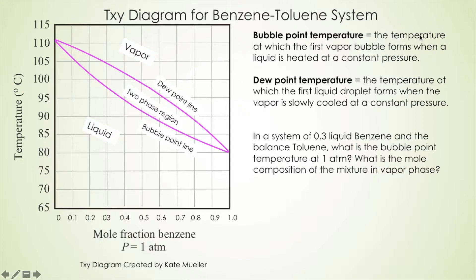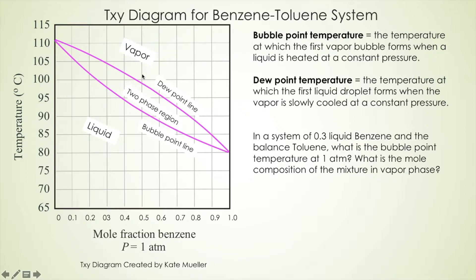The bubble point temperature is the temperature at which the first vapor bubble forms when liquid is heated at constant pressure. Starting from the liquid side, as the liquid is heated it moves upward, and when it touches the vapor-liquid equilibrium line, that's where the first vapor bubble forms — this is the bubble point temperature line. The dew point temperature is the temperature at which the first liquid droplet forms when vapor is slowly cooled at constant pressure. Starting from the vapor side and cooling down, when you touch the vapor-liquid equilibrium line, that's where you read the dew point temperature — this is the dew point line.